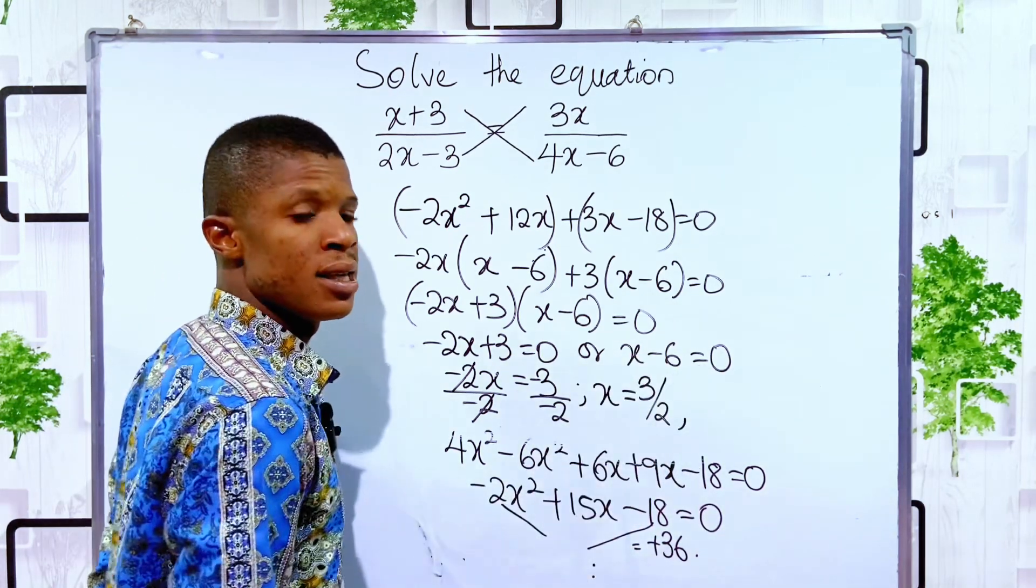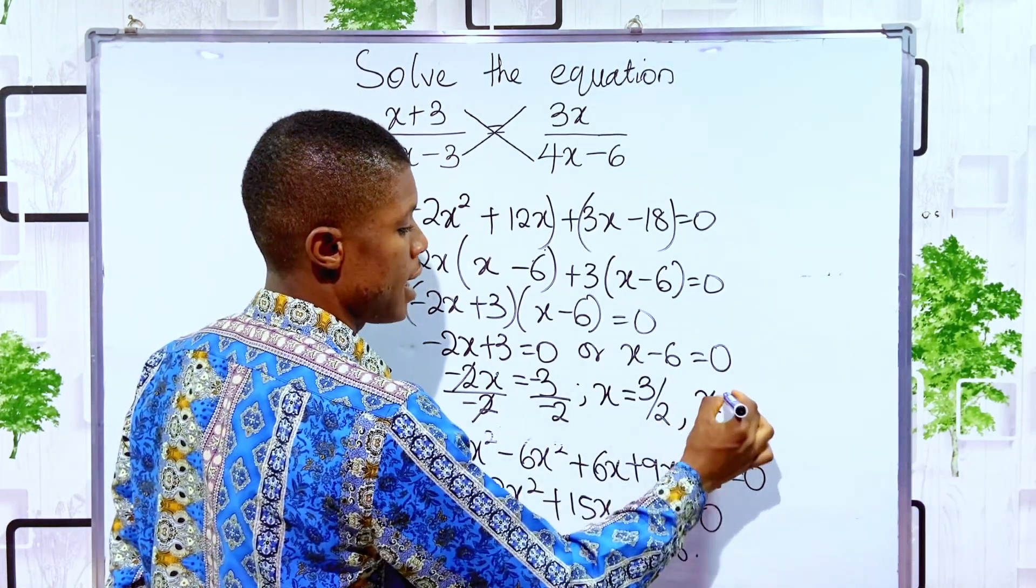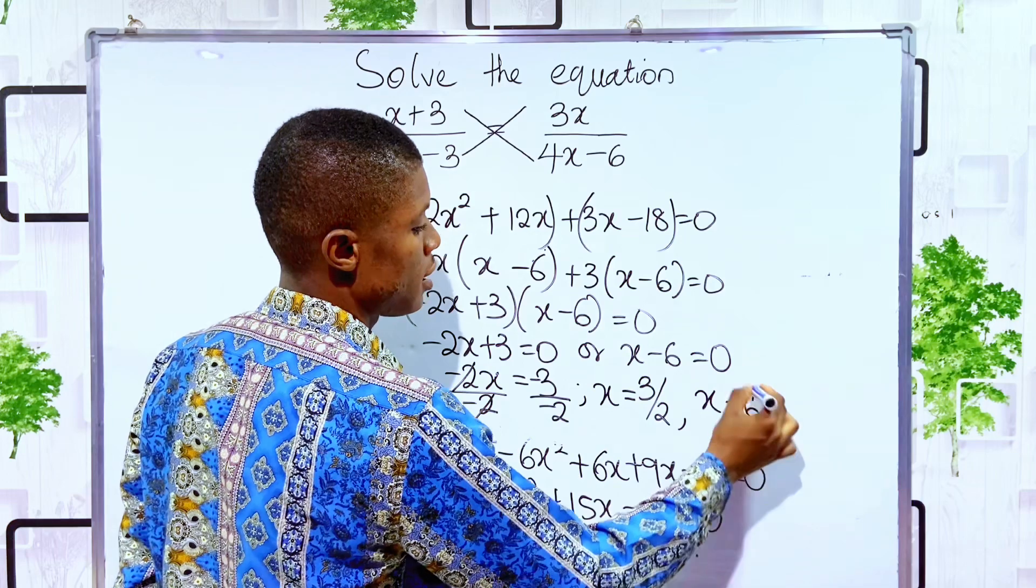Then, if x minus 6 is equal to 0, meaning that x is equal to 6.